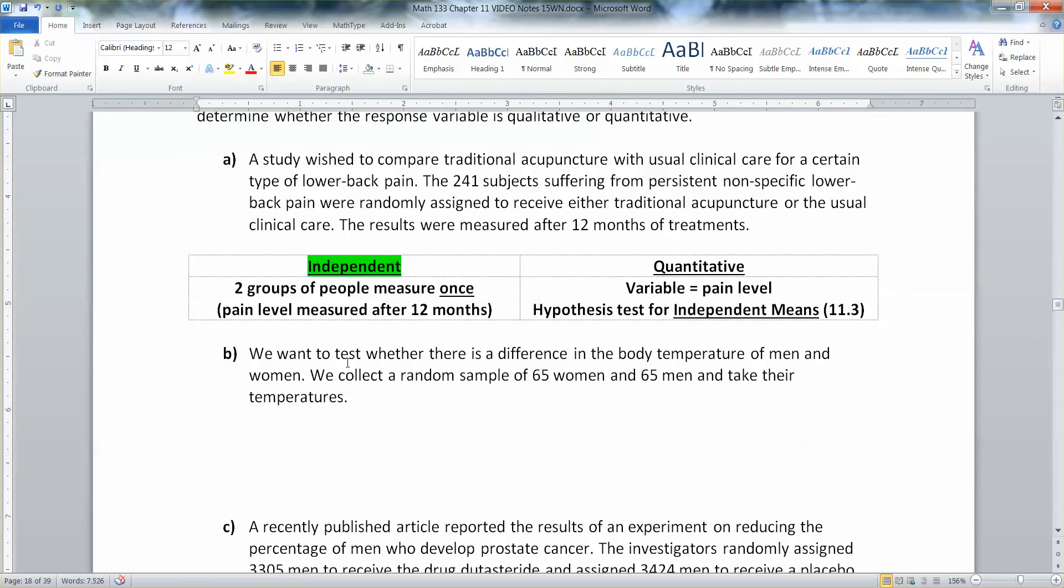All right, suppose we want to test whether there's a difference in the body temperature of men and women. We collect a random sample of 65 men and 65 women and take their temperatures. Well, that would definitely be independent. Primarily because they're randomly selected into either male or female group. And the male and the females have really nothing to do with each other, right?